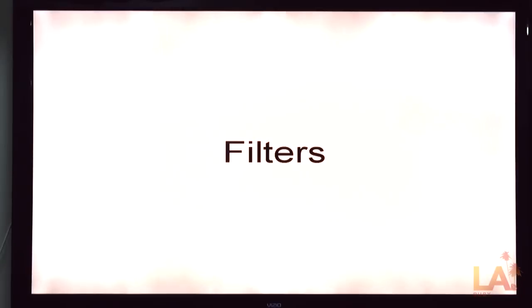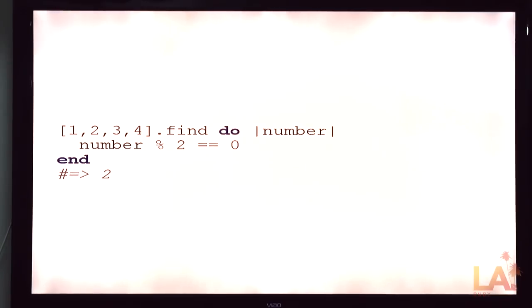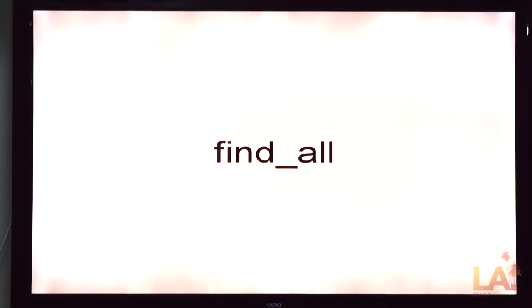So the actual kind of tools that we get from Enumerable fall into a few categories. The first one I'll talk about is the filtered ones. If you've been reading at all, there's find, returns the first value that matches the block. We're all on this page? I'm not telling anyone anything they didn't know? Then I'll try to speed up a little bit.